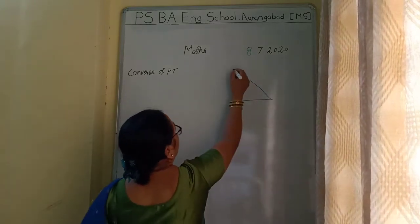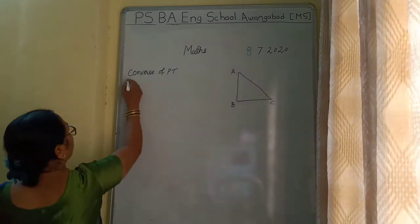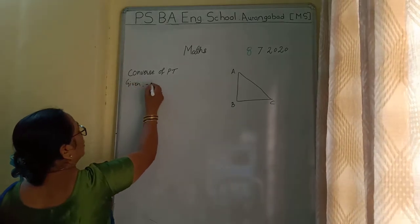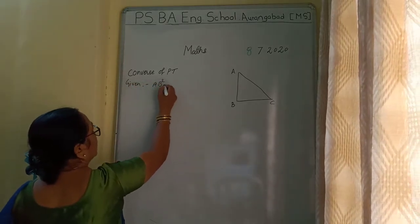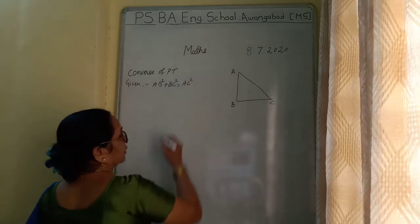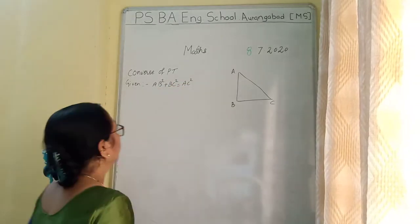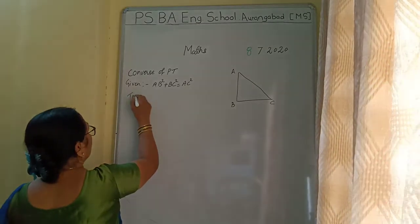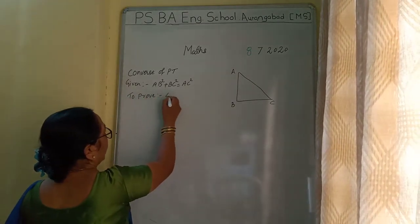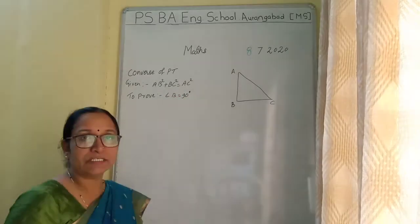Converse of Pythagoras theorem. Given: triangle ABC, AB square plus BC square is equal to AC square. We need to prove that angle B is equal to 90 degrees.